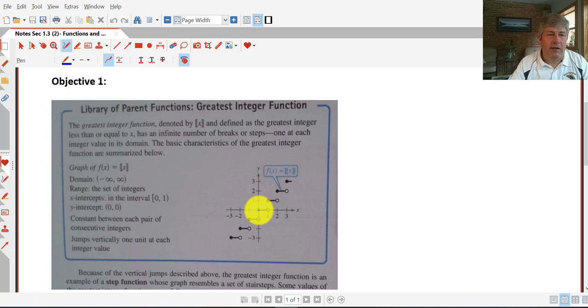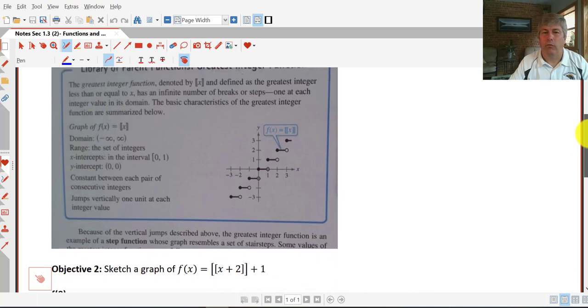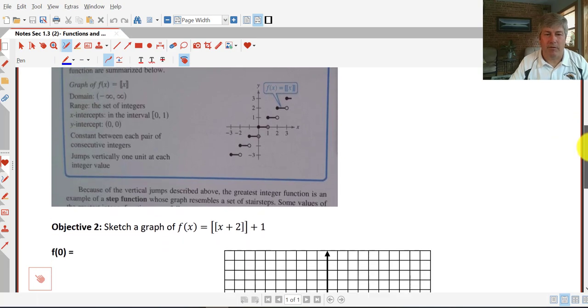As you can see, we've got our summary of domain and range and what the x and y-intercepts are. Take a good look at that. These functions are unique because of the vertical jumps in the range. That's why it looks like steps.